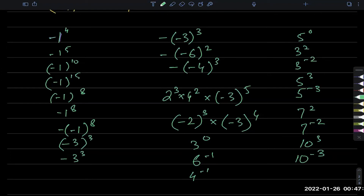The second-to-last one is minus 3 to the power of 3 — negative has an odd power, so it's going to be negative. What is 3 power 3? 27. So it's minus 27. And then the last one is also minus 3 power 3, giving minus 27. Perfect.